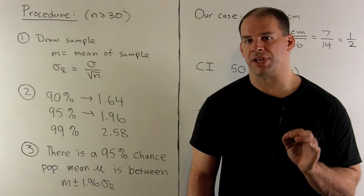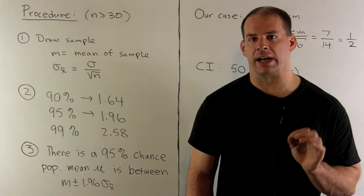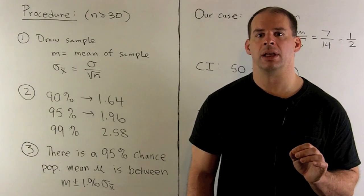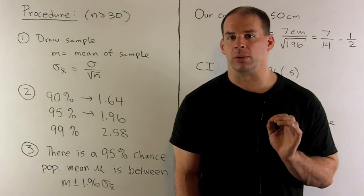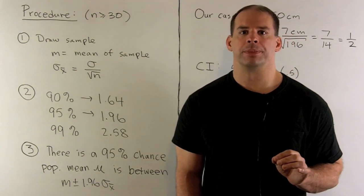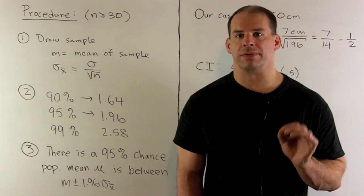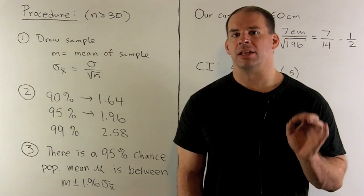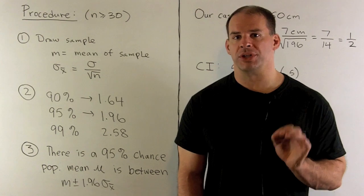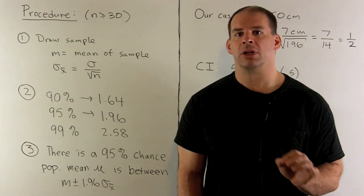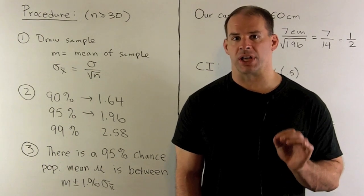Our sample size is 196, which is greater than or equal to 30. So the sampling distribution for the mean is approximately normal, and we treat it as such.